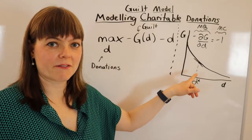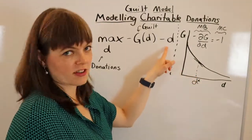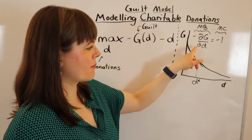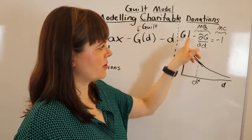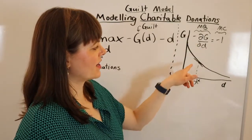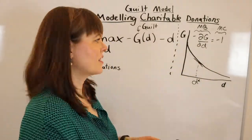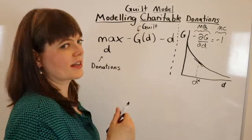At this point, we have marginal benefit equals marginal cost. The marginal cost, of course, is $1 that you give. And the marginal benefit should be the tangent of the guilt, the reduction in guilt from giving that extra dollar. So that should give us the solution to this optimization problem.